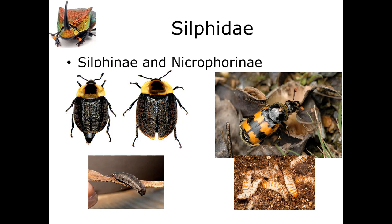The next family is the Silphidae, commonly called the carrion beetle, the sexton beetle, or the burying beetle. These are distributed worldwide, and this family has over 1,500 species. The adults are often associated with the early stages of decomposition and will usually arrive within the first 24 hours after death. The adults will feed on the eggs and first instar larvae of flies that feed on carrion. The larvae, on the other hand, are associated with later stages of decay and actually feed on the carrion itself.